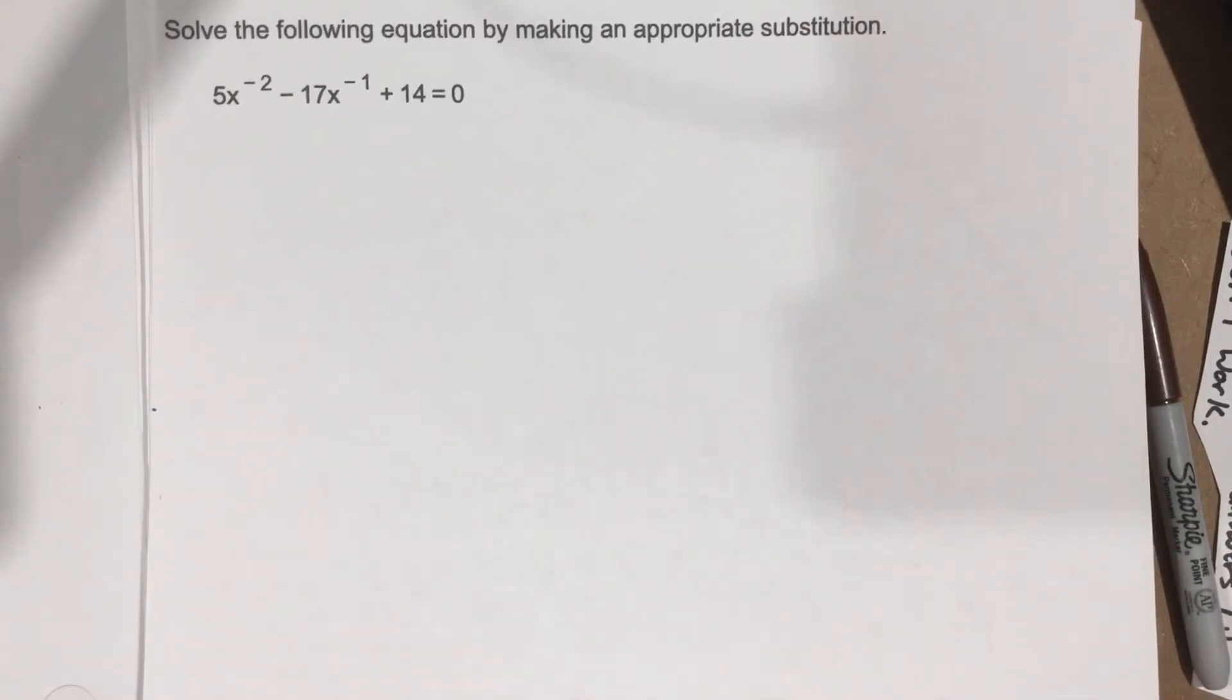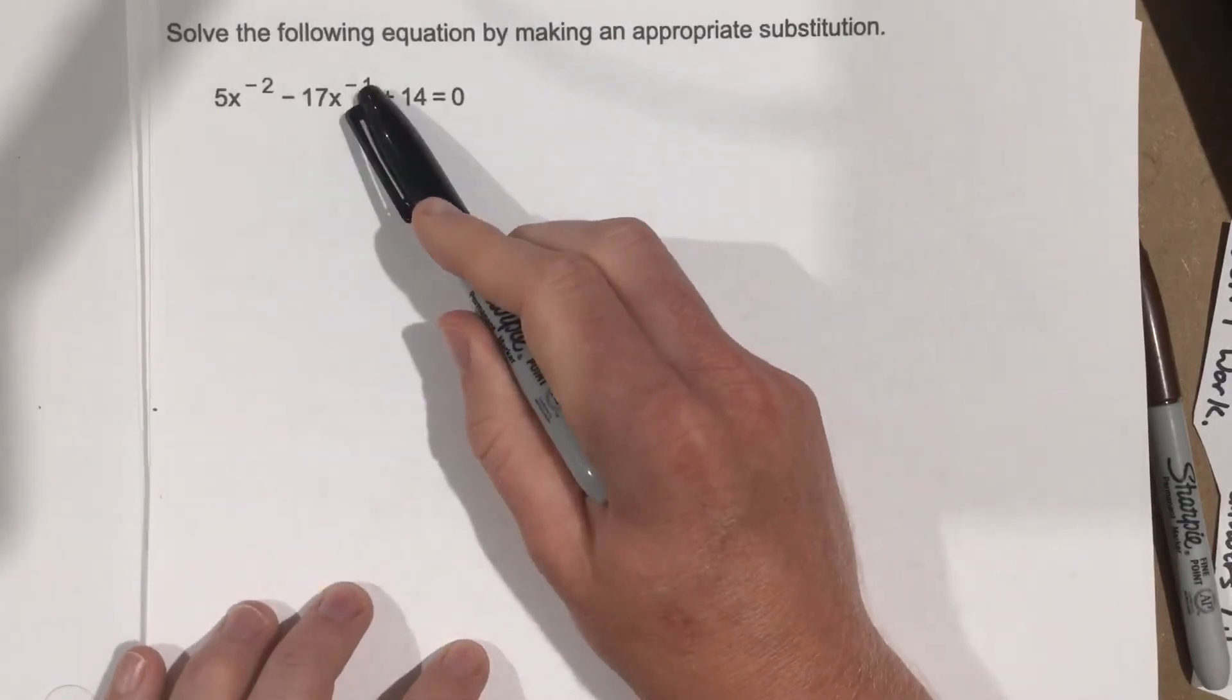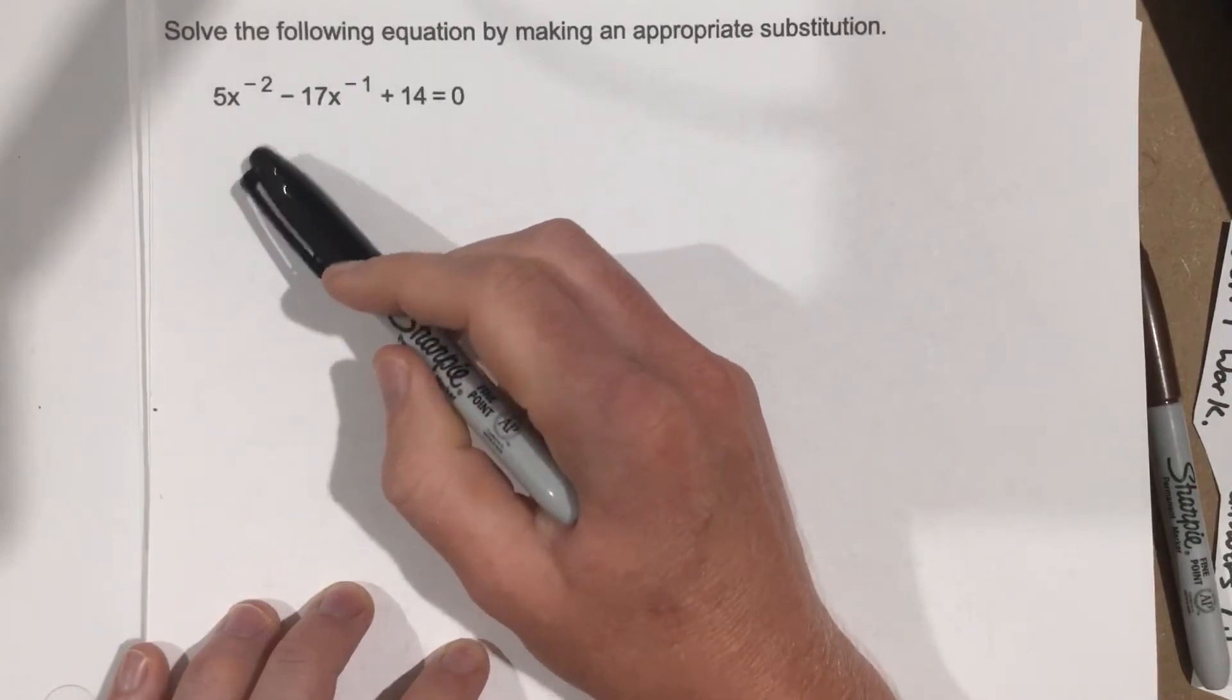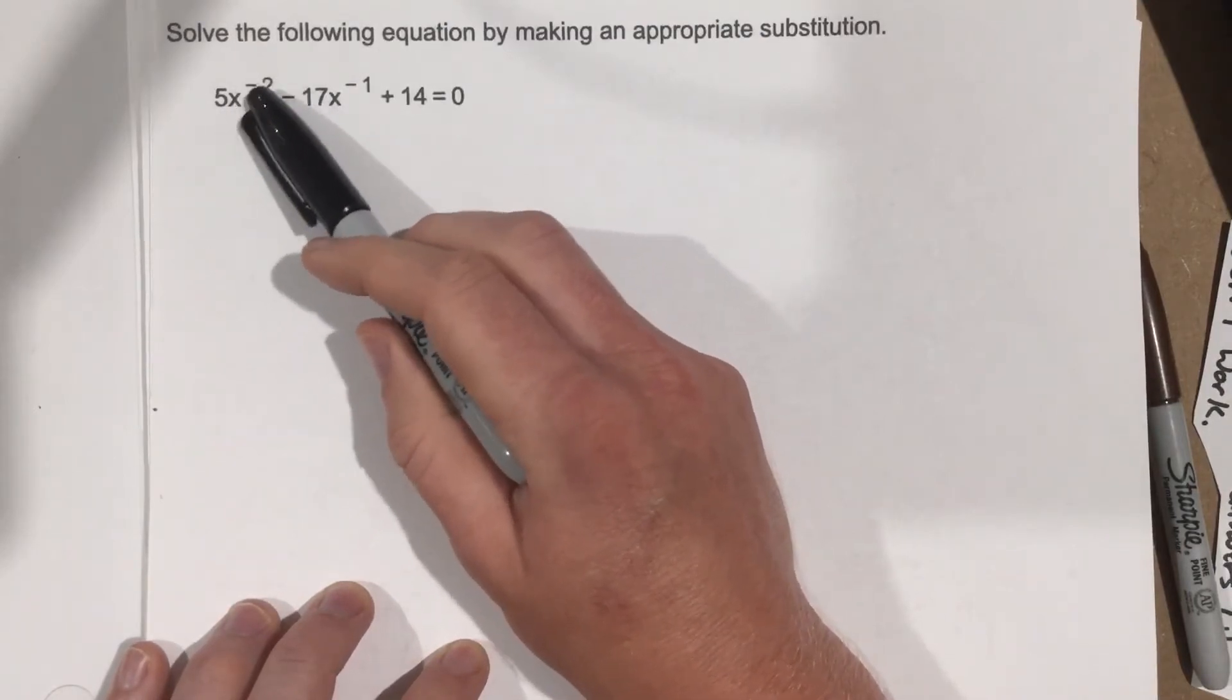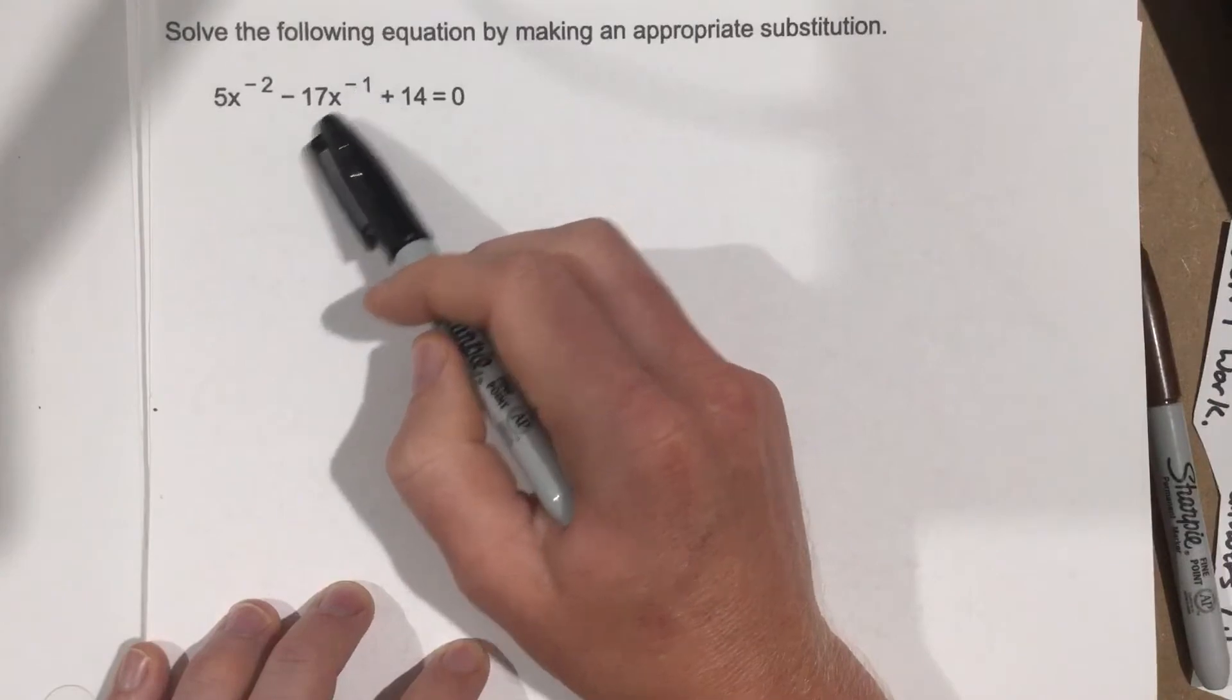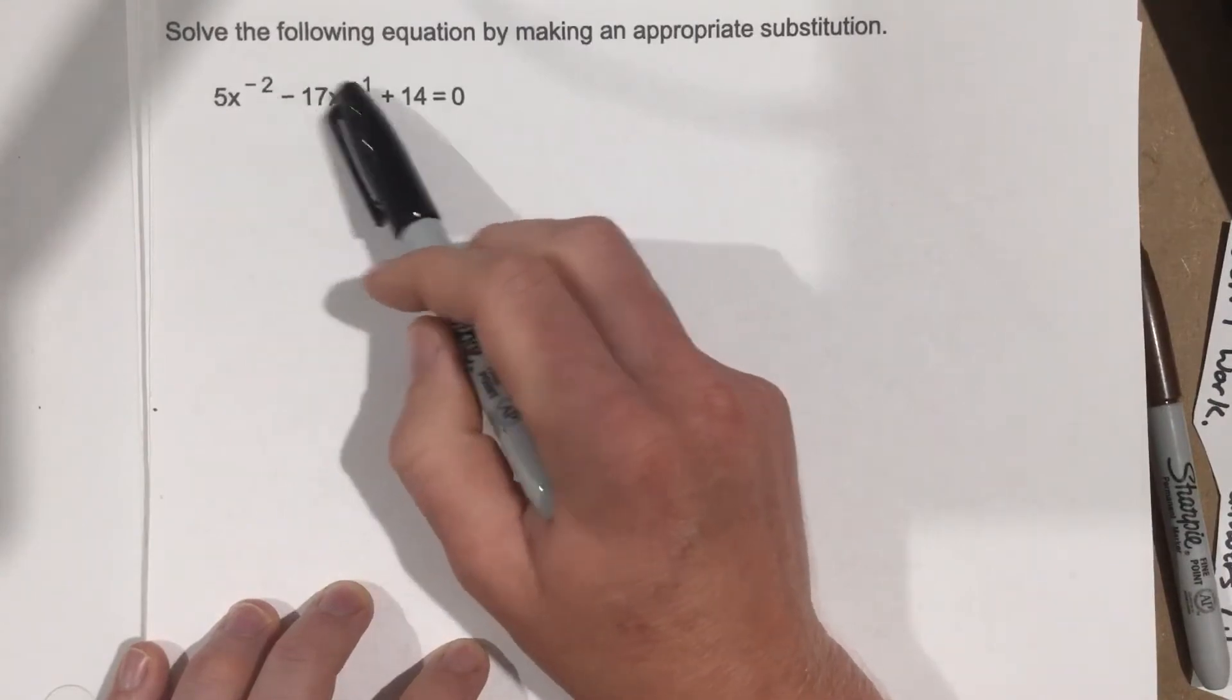Now, you'll notice we have x to the negative 1 and x to the negative 2. We're not used to that, right? We're used to maybe x squared and then just x. And these powers are the exact opposite. Well, we're going to do something that's pretty nice.